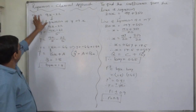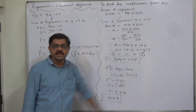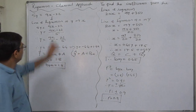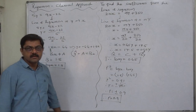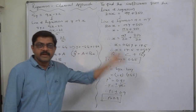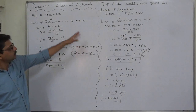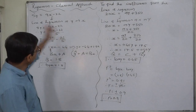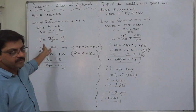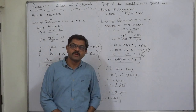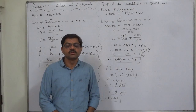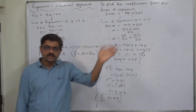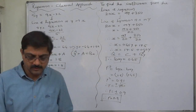In this case, it was straightforward to identify which equation is the line of regression of y on x and which is of x on y. If the equation is written in standard mathematical form, it is advisable to treat the first as the line of regression of y on x and the second as the line of regression of x on y. That is not a rule, but a suggestion from experience. Thank you very much.